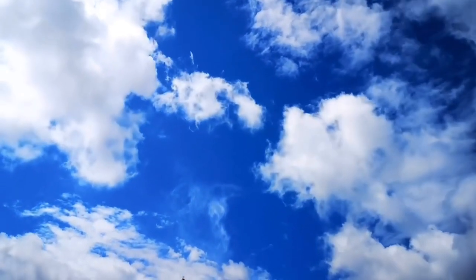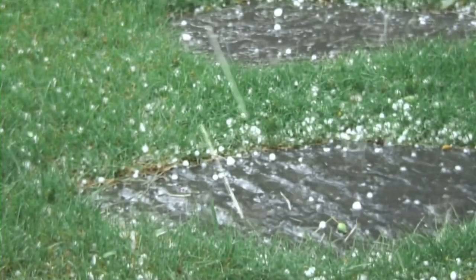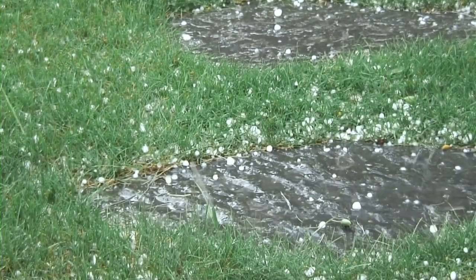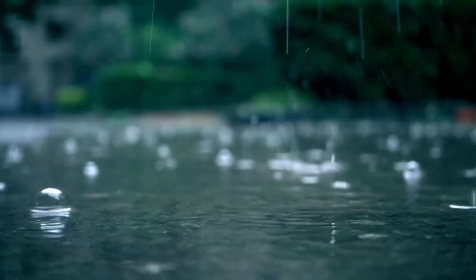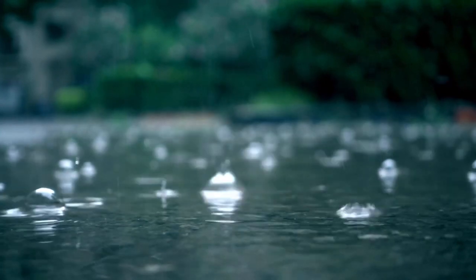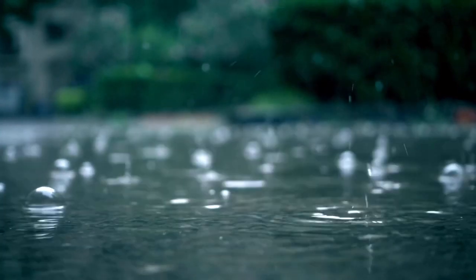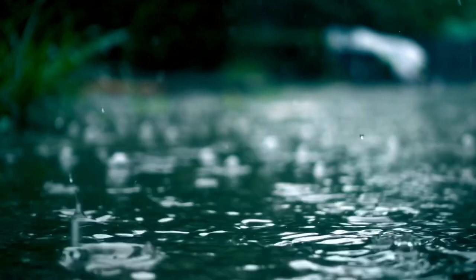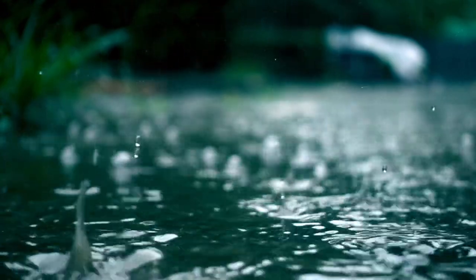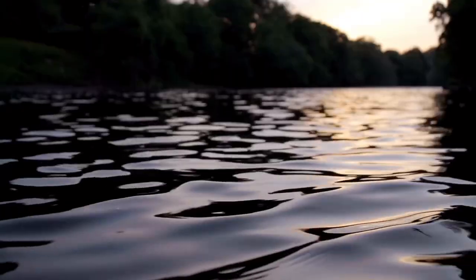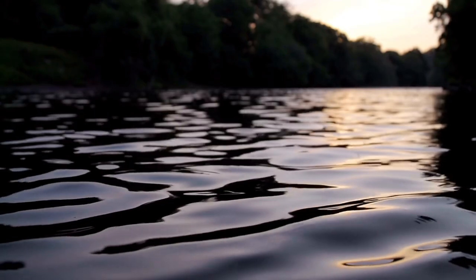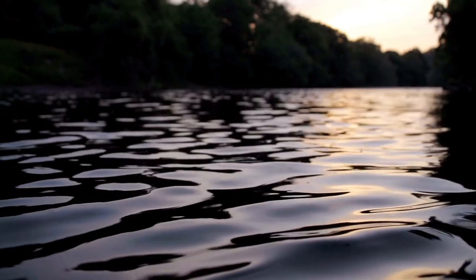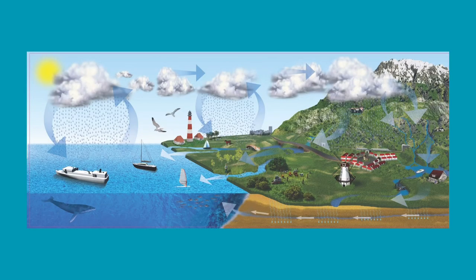These clouds can then release their moisture in the form of rain, snow, or hail, in a process known as precipitation. Once the water has fallen back to Earth, it can take several paths. Some of it may evaporate again, some may be absorbed by plants or animals, and some may flow into rivers, lakes, and other bodies of water, eventually making its way back to the oceans and restarting the cycle.